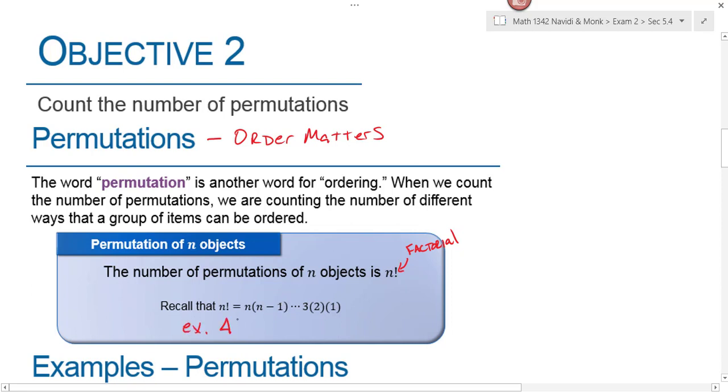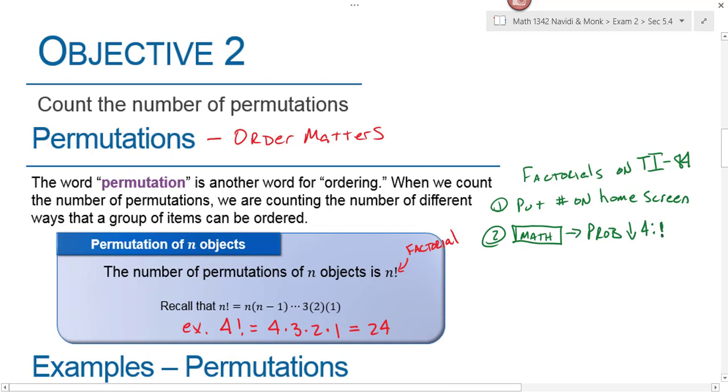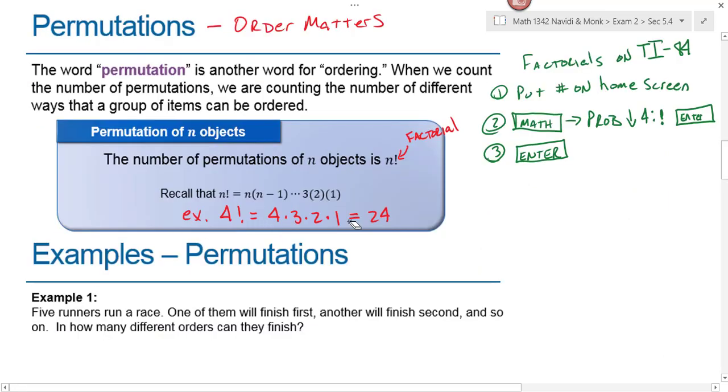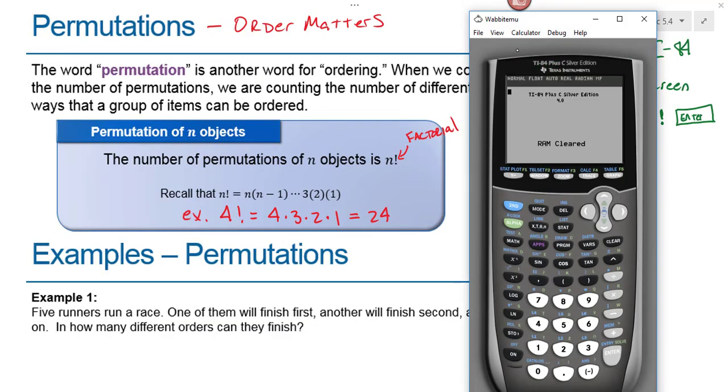So for example, if I had 4 factorial, that would be equal to 4 times 3 times 2 times 1, and that would be 24. We can use our calculators to get this number. Your first step is to put the number on the home screen. Then you're going to hit math, go over to probability, go down to number 4, which is the exclamation point, and then hit enter. Then I'll put the factorial symbol on your home screen and then you hit enter again to get your answer. So let's check this for factorial using our graphing calculator. Go ahead and get your calculator out.